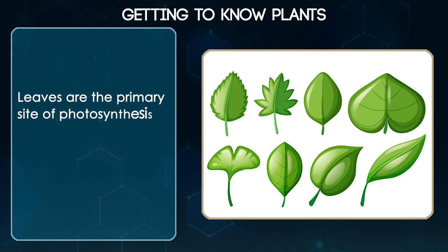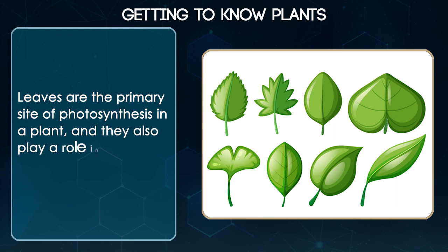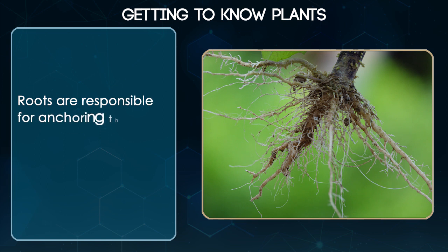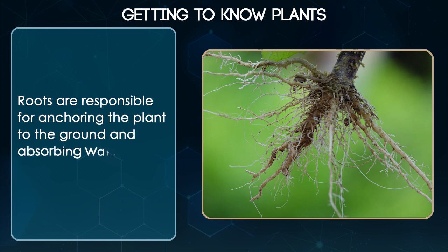Leaves are the primary site of photosynthesis in a plant and they also play a role in transpiration. Roots are responsible for anchoring the plant to the ground and absorbing water and nutrients from the soil.